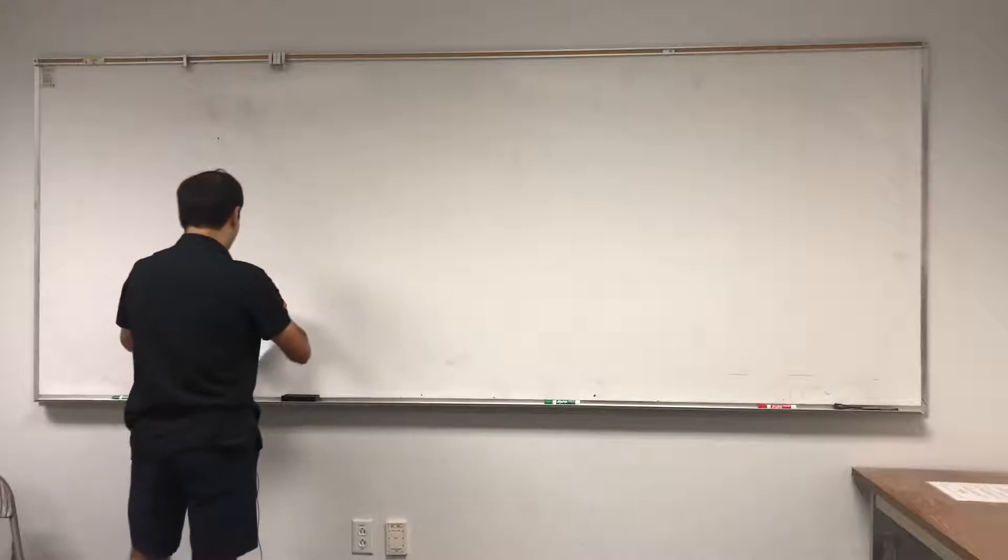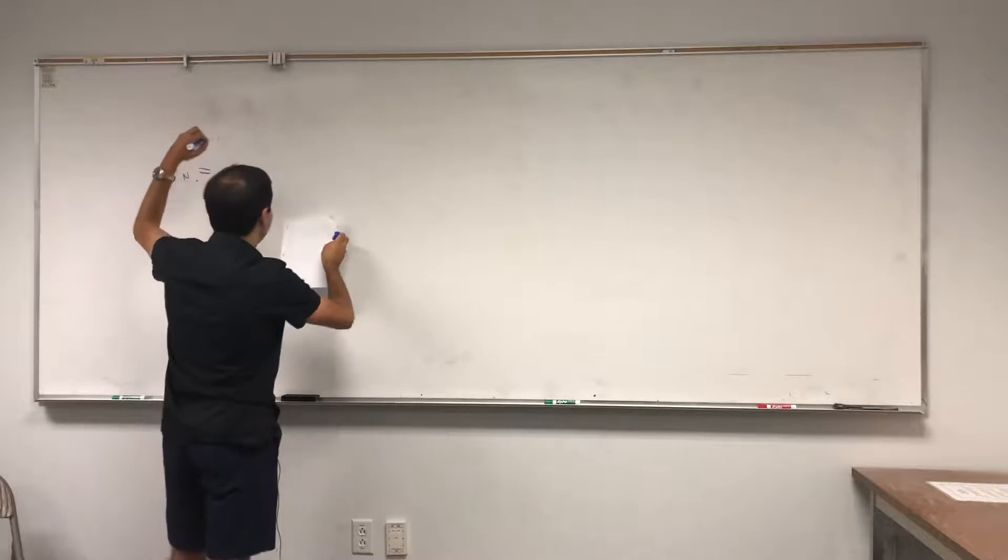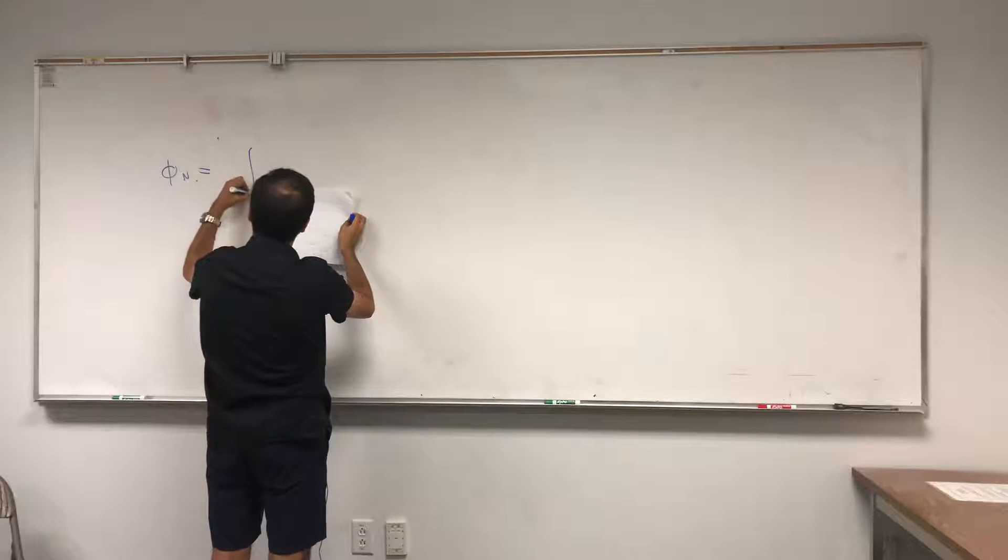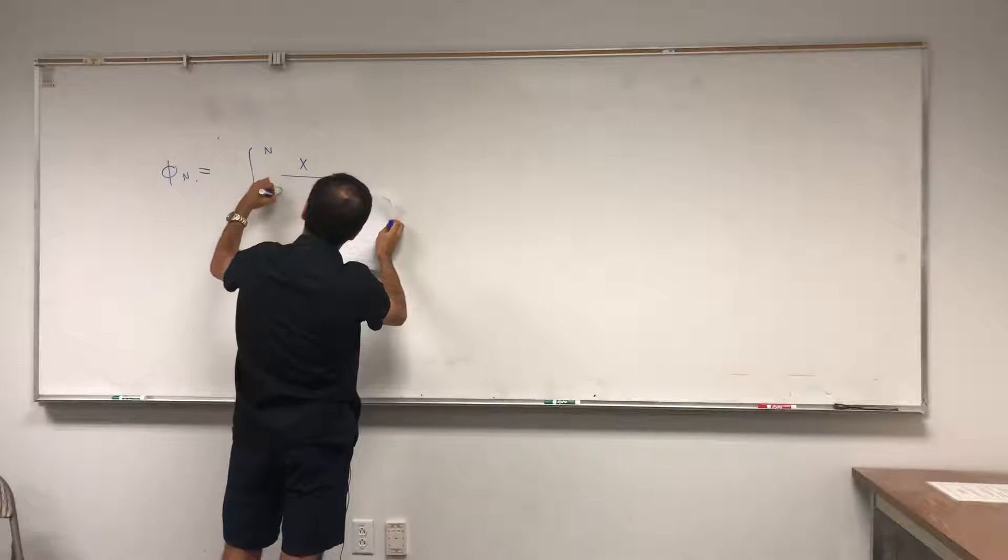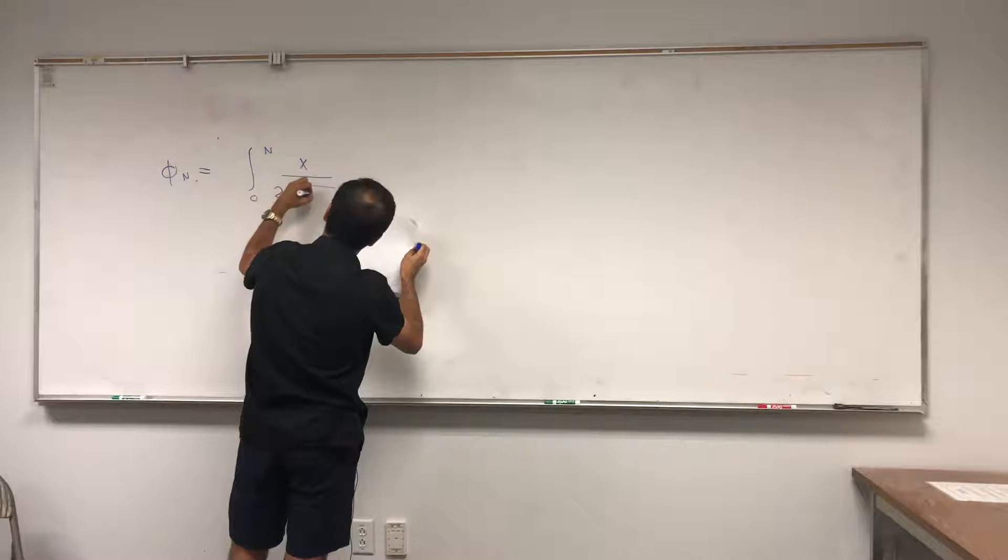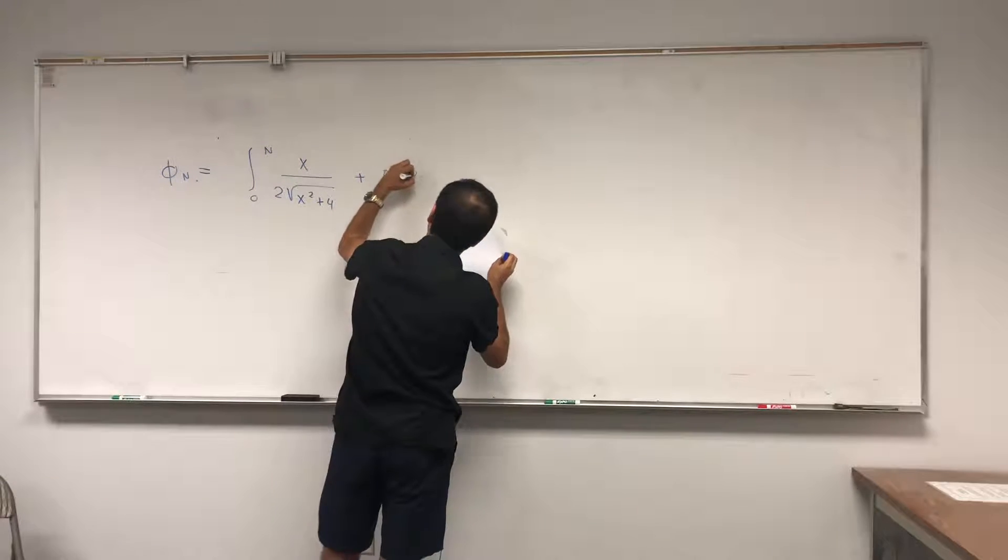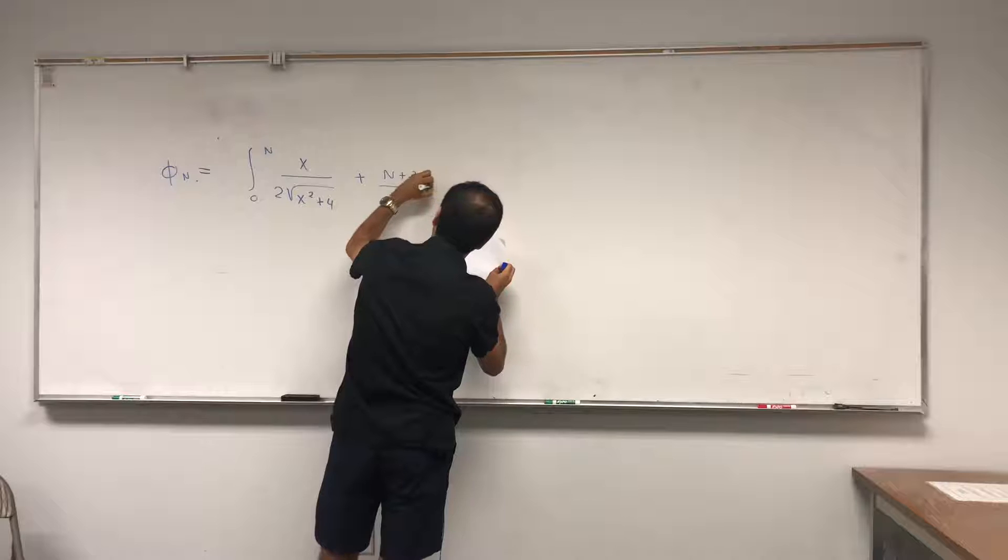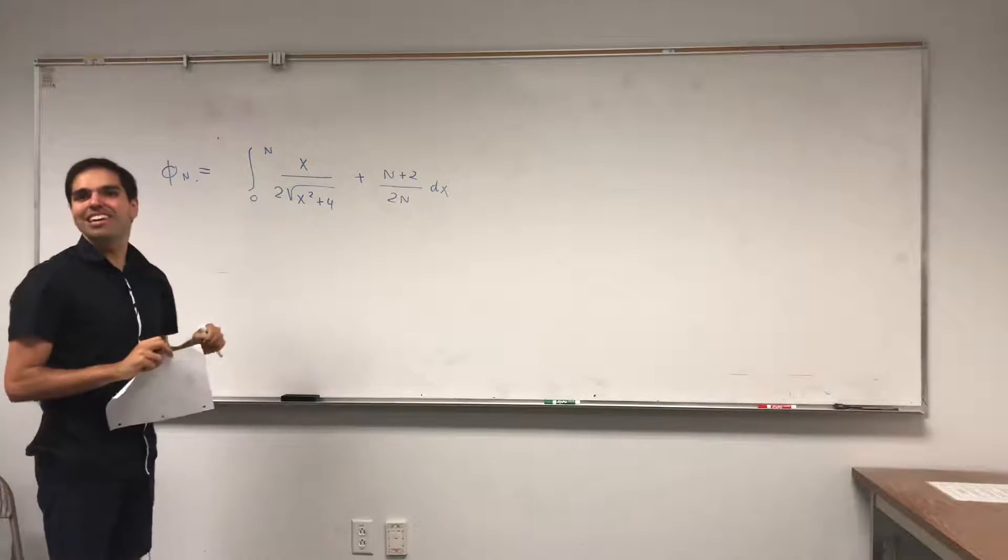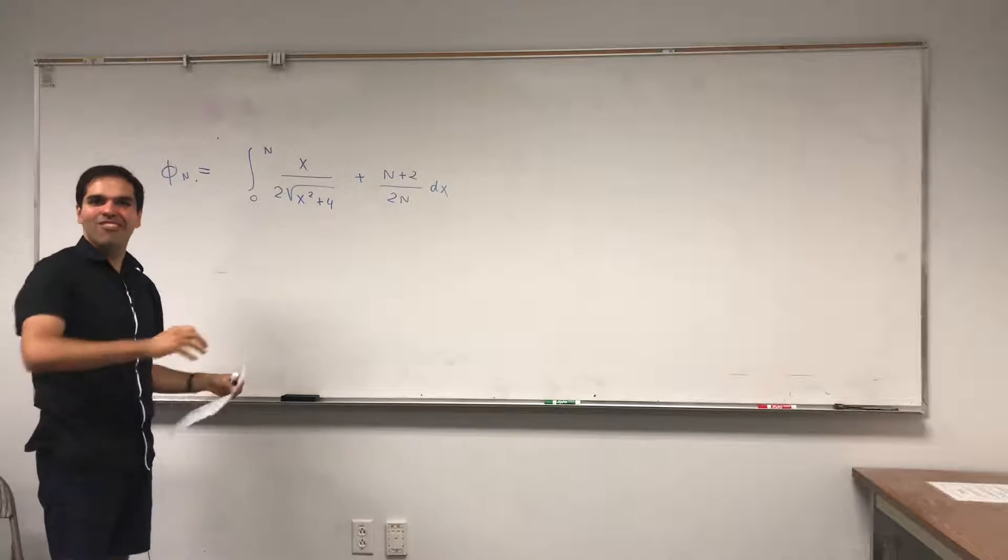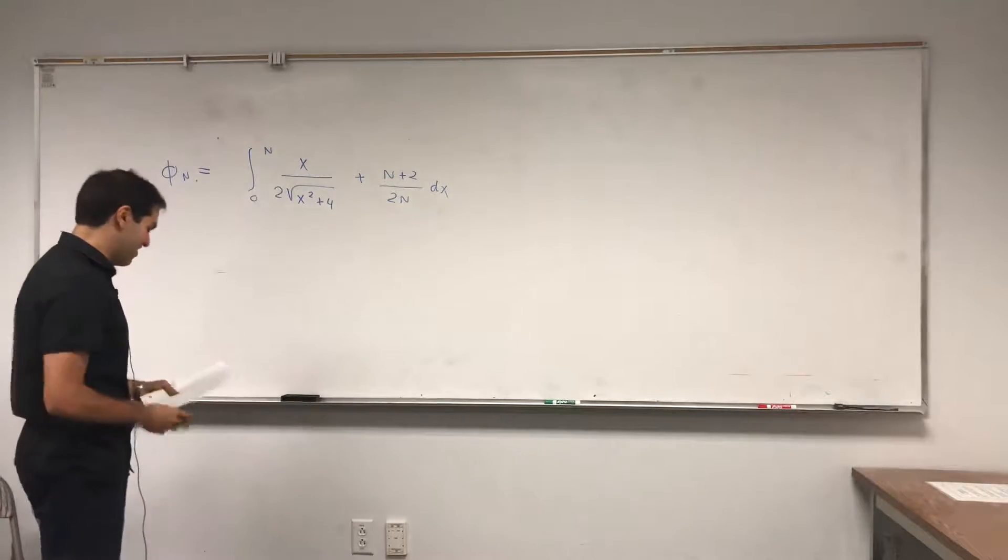So define the following integral, let's call it phi n. In fact it's a sequence of integrals, which is the integral from 0 to n of x over 2 times x squared plus 4, plus n plus 2 over 2n dx. So for every n you get a certain integral and we'll solve all of them at the same time because this is calculus.